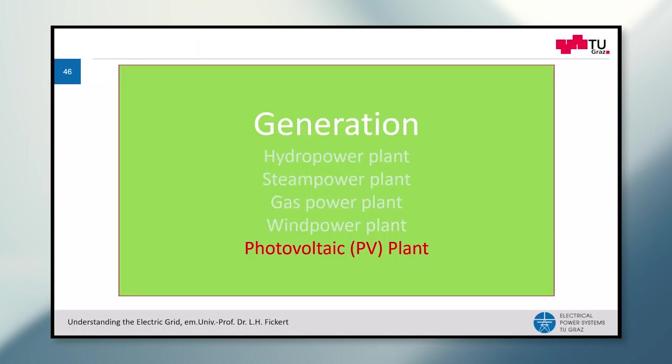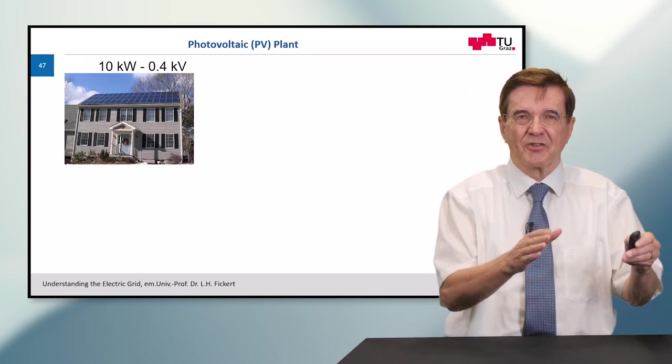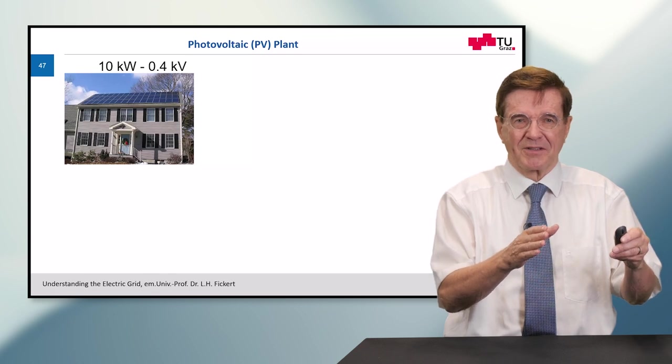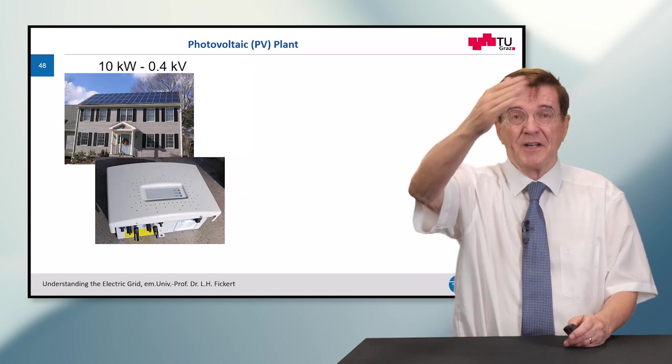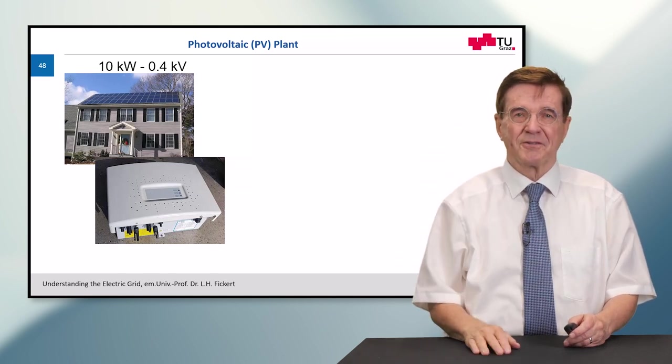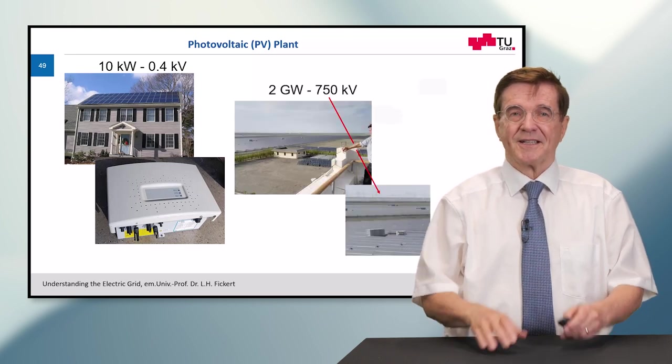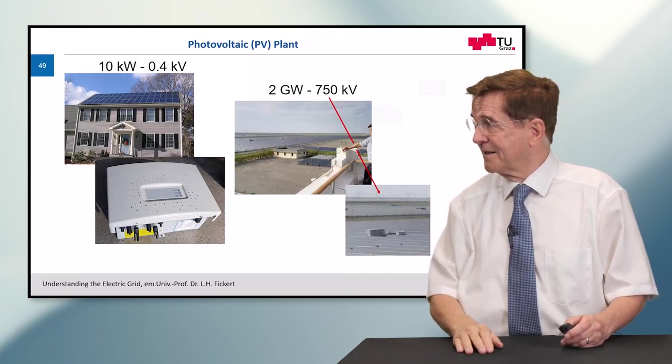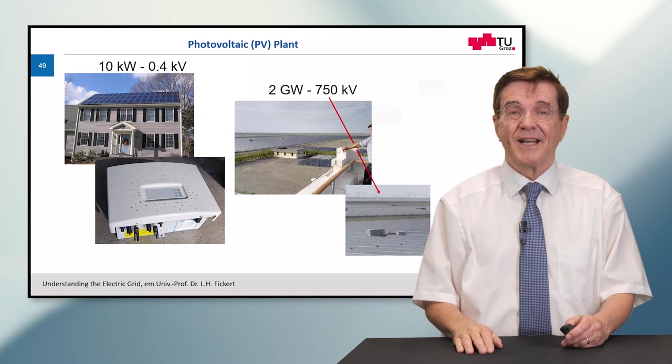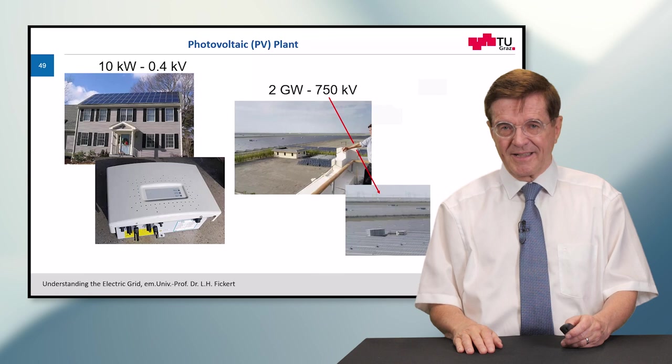The last power conversion mechanism in our course which is selected by me is the photovoltaic plant. So here we can see a small size photovoltaic plant on a private house and from the DC current which is produced on the roof it goes to this inverter or converter and this makes AC current. But also you can stack these together and for example I show you here to my right side there is a 2 gigawatt plant and if you look carefully the energy that is produced is brought away by 750 kV lines.